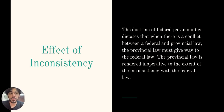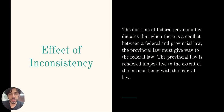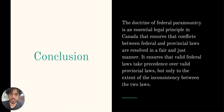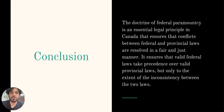Where there is a conflict between a federal and a provincial law, the doctrine of federal paramountcy dictates that the federal law must be followed over the provincial law. This means that the provincial law is deemed inoperative to the extent that it is inconsistent with the federal law. This principle ensures consistency and clarity in law. In conclusion, the doctrine of federal paramountcy ensures that valid federal law takes precedence over valid provincial law in cases of inconsistency, but only to the extent of the inconsistency — not completely. This principle promotes consistency and clarity and helps prevent confusion from conflicting laws.